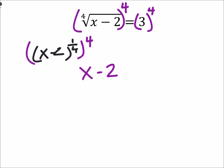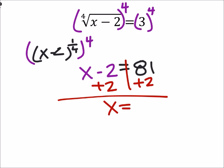So that gives us x minus 2 equals 3 to the power of 4, which is 81. From here to solve for x, I would add 2 to both sides and I would find that x is 83.